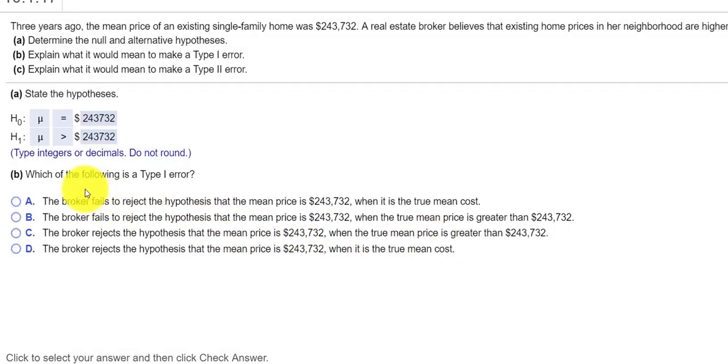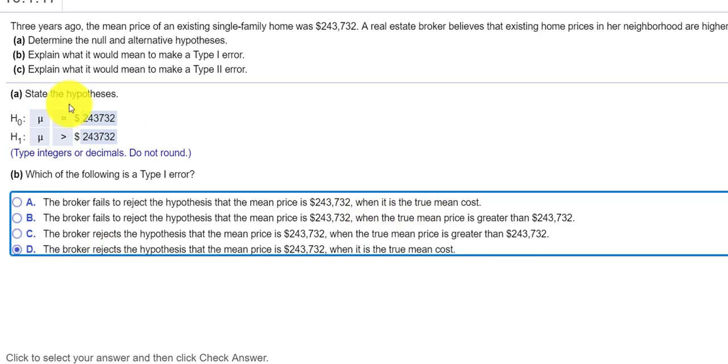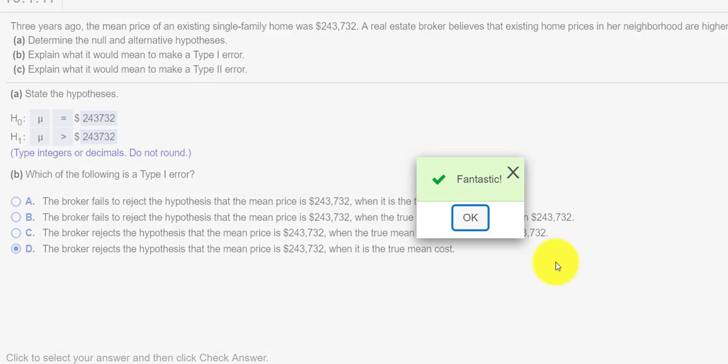And now it says which of the following is a type one error. So the type one error is when we reject, when we incorrectly reject the null hypothesis. So when we reject the hypothesis that the mean price is $243,732, when in fact it is the mean cost. But if we accept the alternative hypothesis, we're saying that the mean price is greater than $243,732.